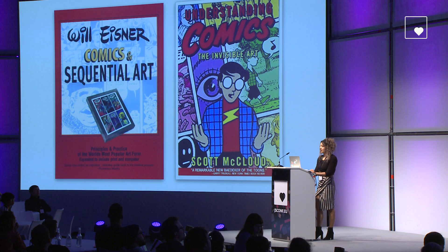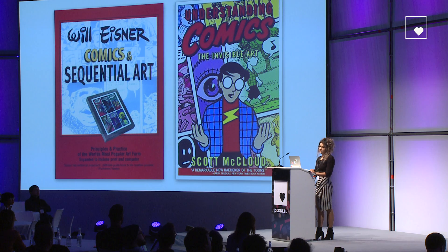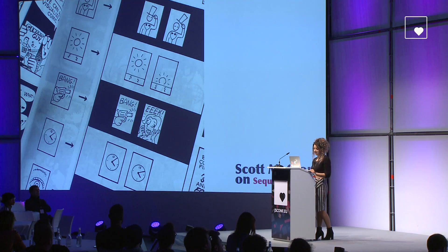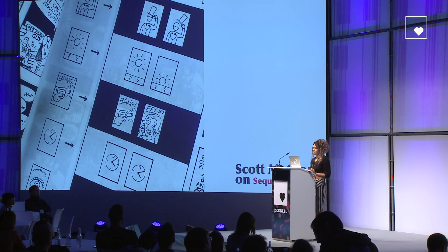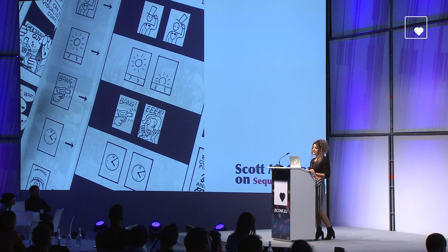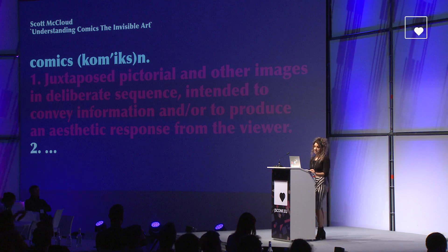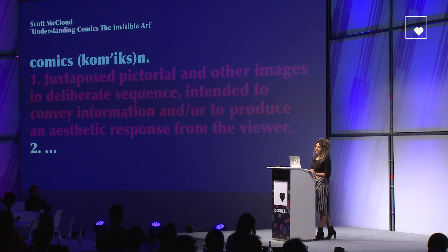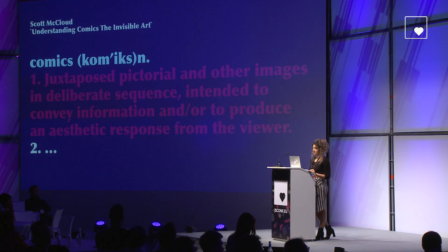Will Eisner, the master comic artist, uses the term 'sequential art' when describing comics. Scott McCloud, a brilliant comic book artist, goes in-depth about the different forms of sequential art in his book, Understanding Comics. McCloud gives a beautiful example of what Eisner means: taken individually, the pictures are just pictures. But when they become part of a sequence, even if that sequence is only two, the art of the image is transformed into the art of comics. He defines comics as 'juxtaposed pictorial and other images in deliberate sequence, intended to convey information and/or to produce an aesthetic response from the viewer.'